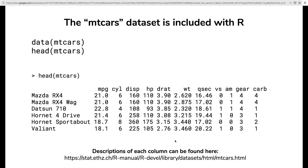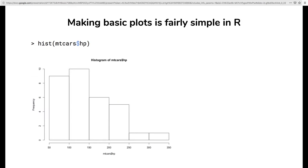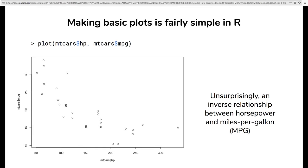Making basic plots in R is pretty simple using functions like hist, points, plot, or lines. For example, if we wanted to get a sense of the distribution of horsepower among all the cars, we could just do the hist command and access the horsepower column of the MT Cars dataset — and we get a decent looking histogram. We can also visualize the relationship between horsepower and miles per gallon pretty simply using base R: just do plot, give it the column you want on the x-axis, the column you want on the y-axis, and you get a decent looking scatter plot showing an expected inverse relationship between horsepower and fuel economy. But we're going to move past this today and start using ggplot.